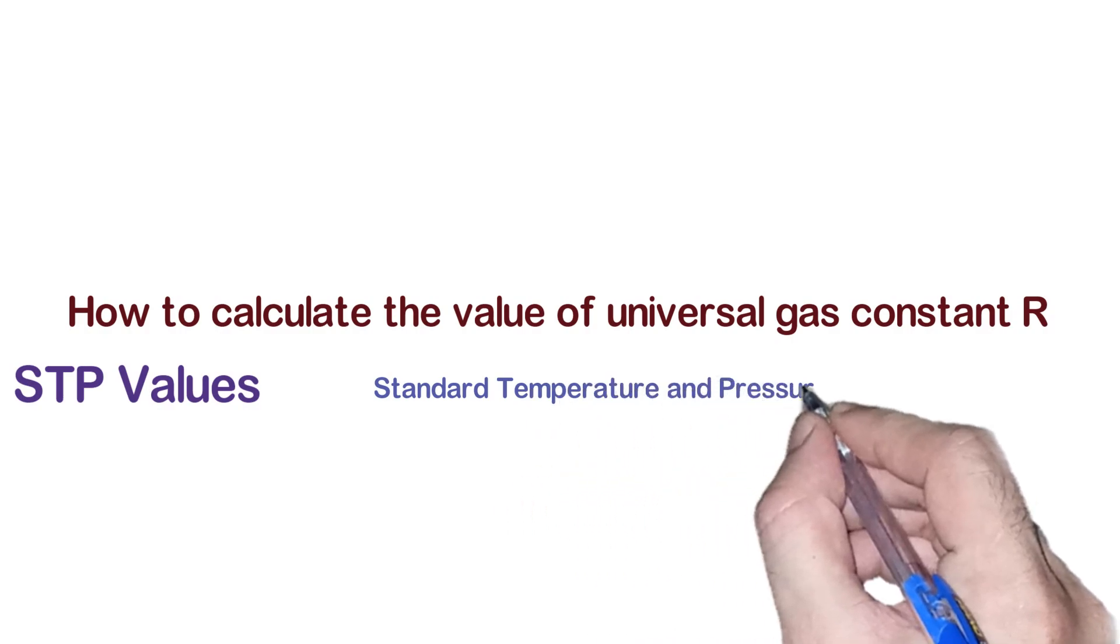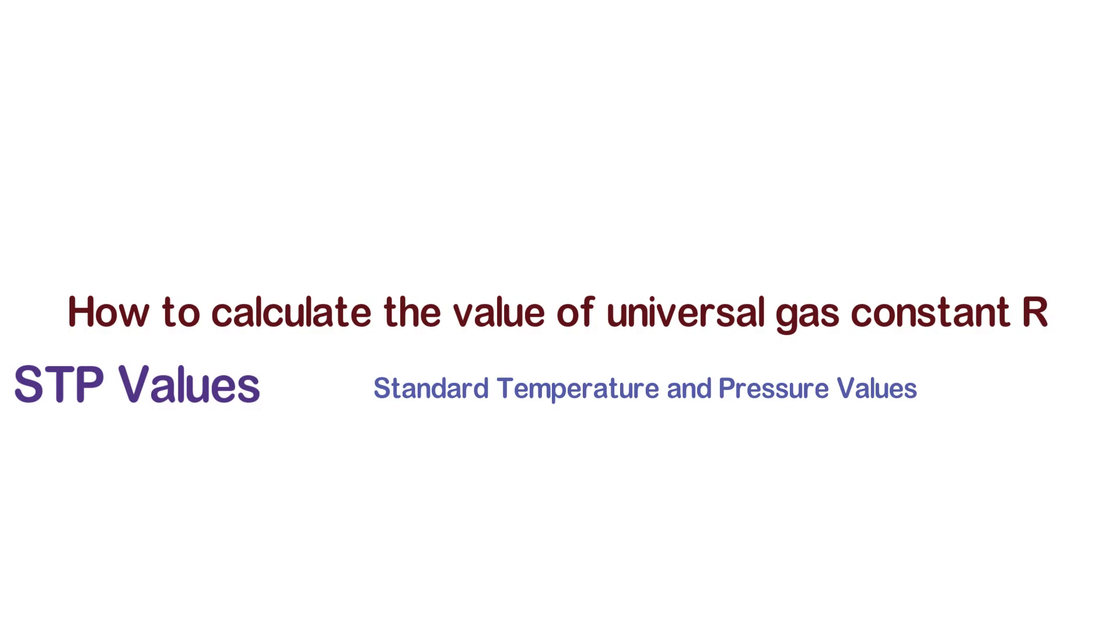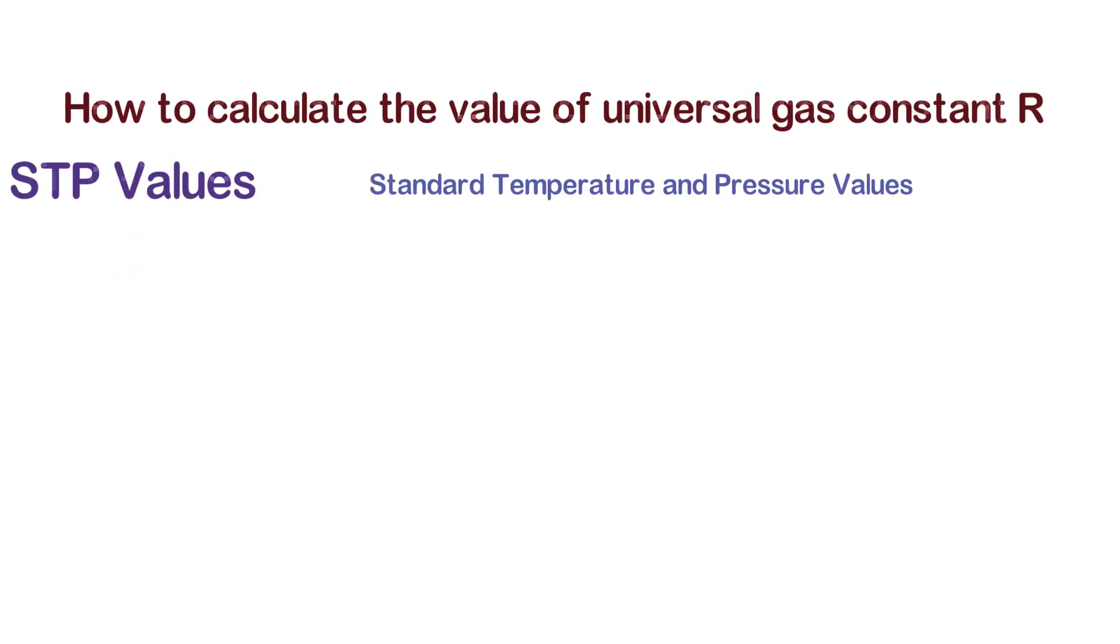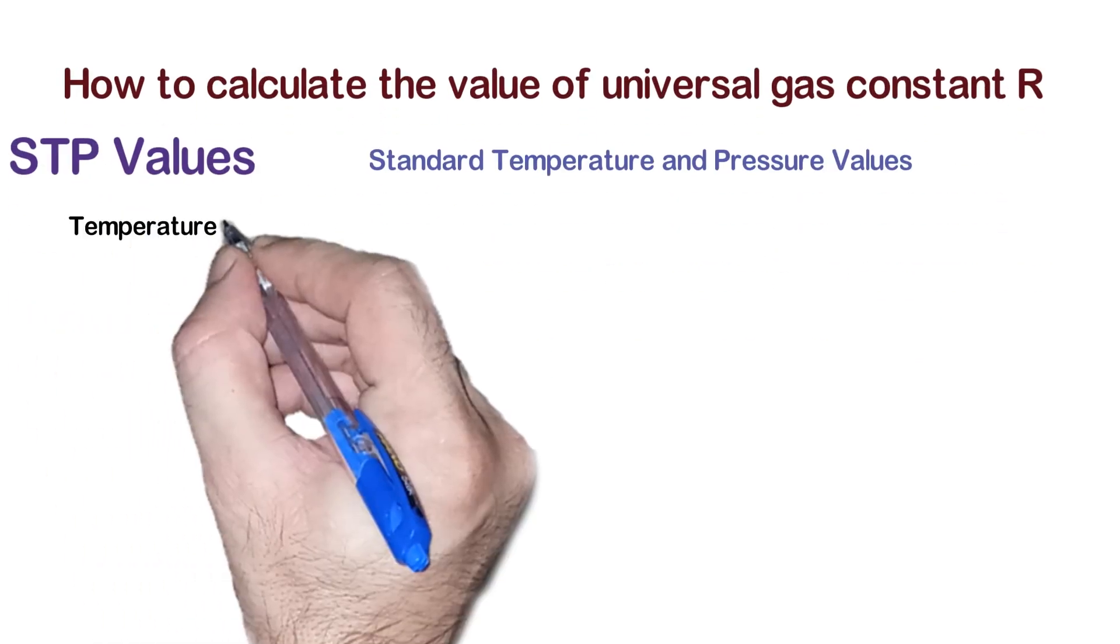STP refers to a set of reference conditions used in chemistry and physics to make comparisons between different gases. These values are standardized to provide consistency in experiments and calculations.